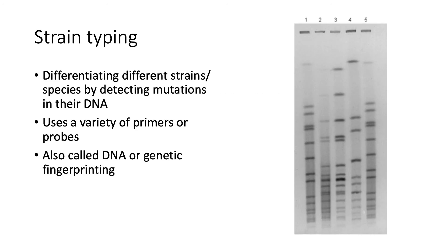Next, let's talk about strain typing. These are a variety of techniques that differentiate different strains or species of bacteria by detecting mutations in their DNA, using a variety of primers or probes. In the figure, you can see different strains of Staphylococcus aureus. Notice the differences and similarities in the bands between strains — lanes 1 and 5 are one strain, 2 and 3 are another, and 4 is yet another. Each strain has a unique band pattern, which is why strain typing is also called DNA or genetic fingerprinting.